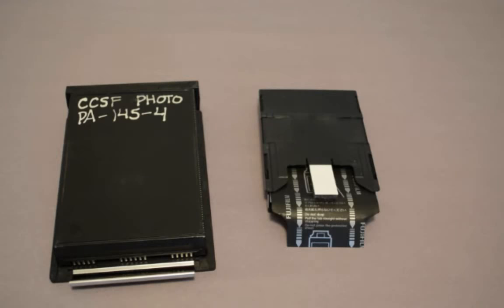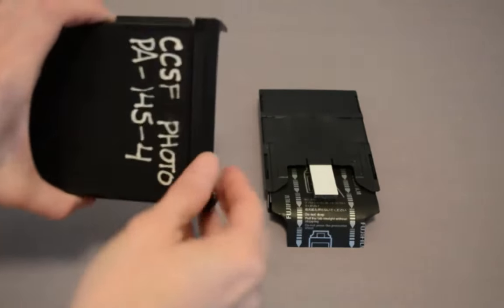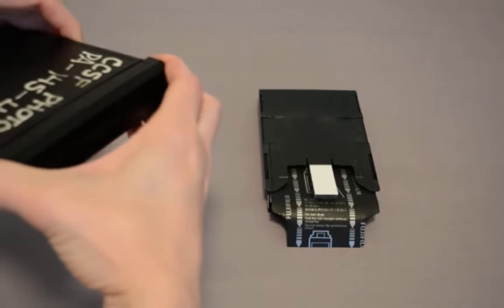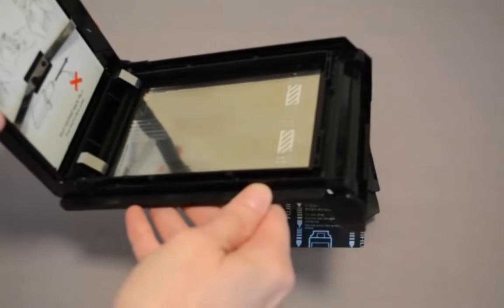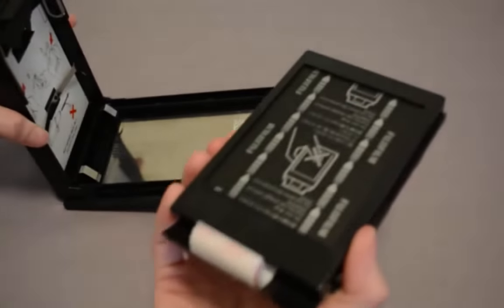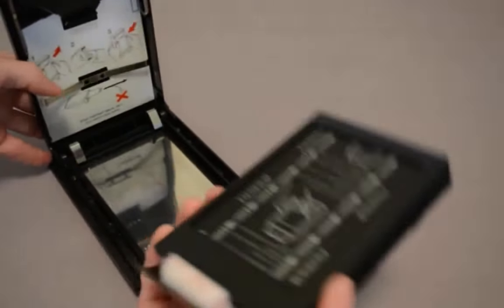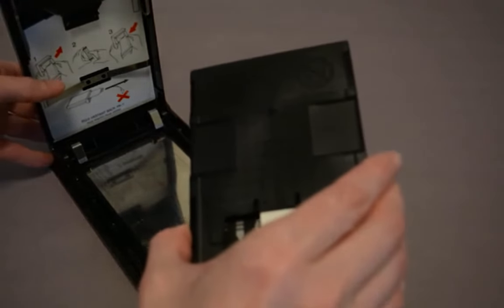Okay, so let's put the film packet into the film holder. Open it up. Take the pack of Polaroid film and gently hold it by the sides.